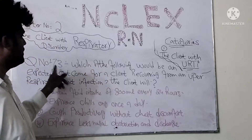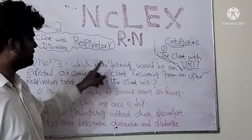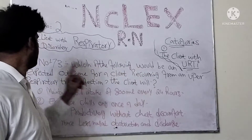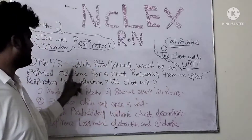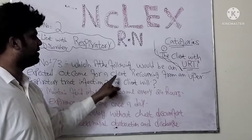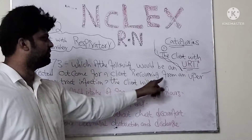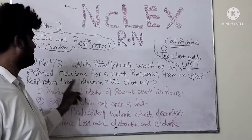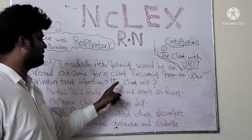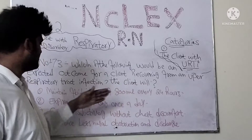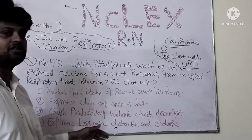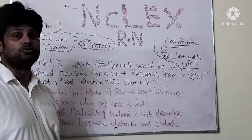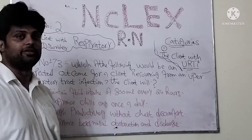We are on question number 73: which of the following would be an expected outcome for a client recovering from an upper respiratory tract infection? The client will — these are the four options which you have to choose one from.